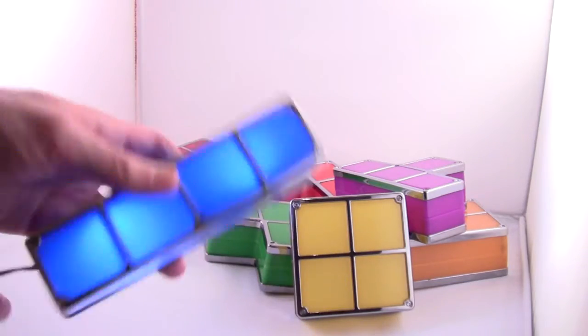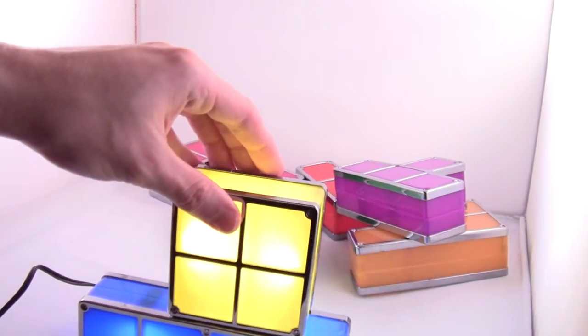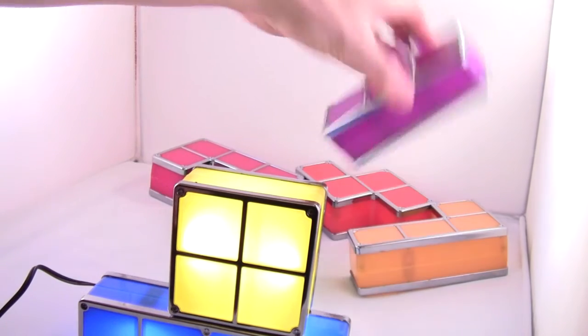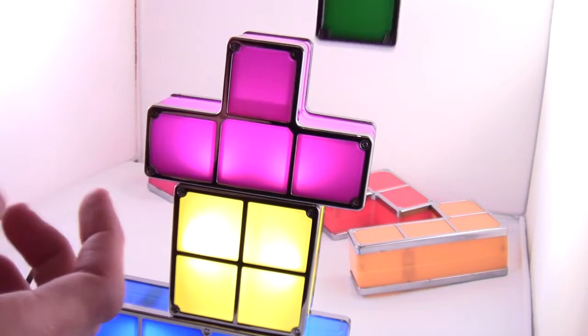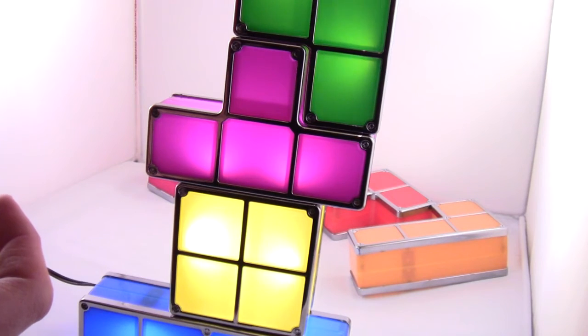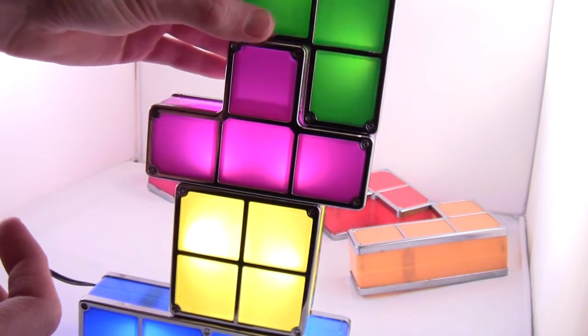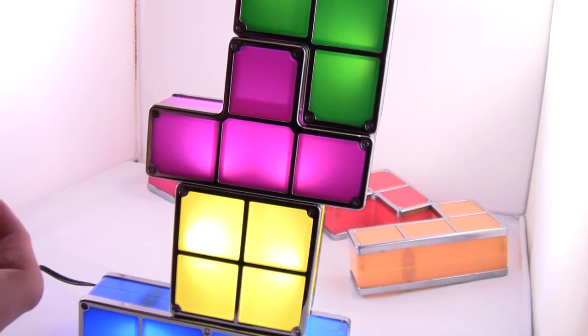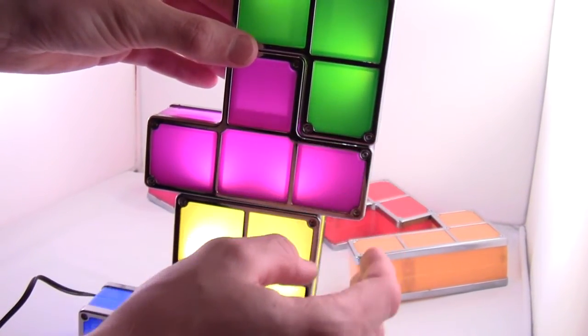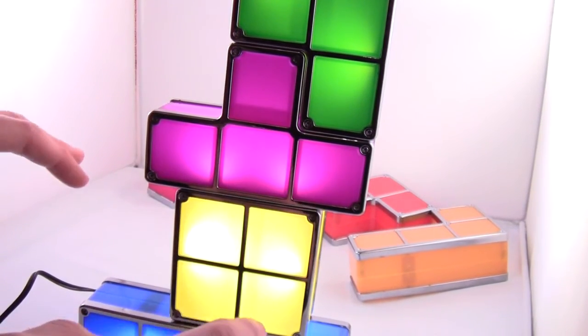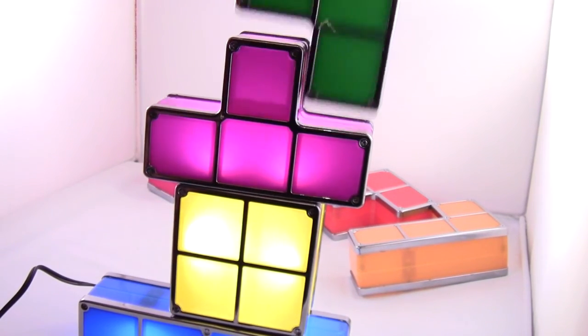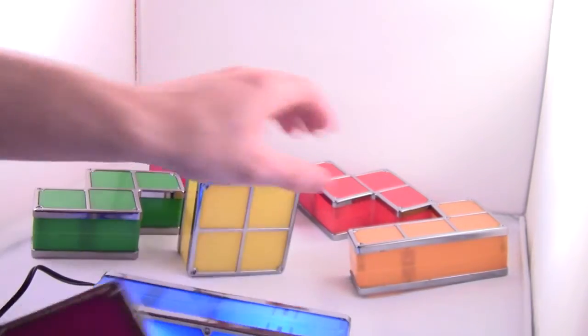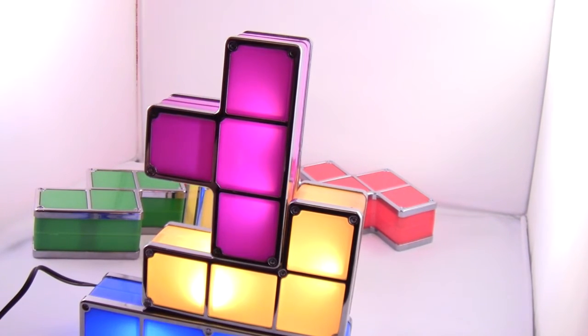That's all lit up, and every time you add a new block on, they light up. It's flashing a little bit, but I think that's because the surface I'm using is quite uneven. Basically, you just stack it up however you want and you've got yourself a neat little lamp.